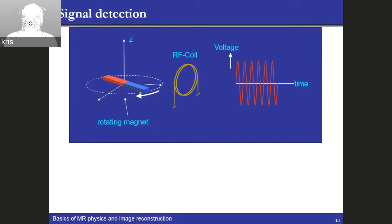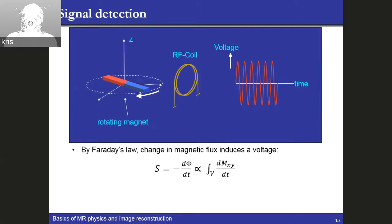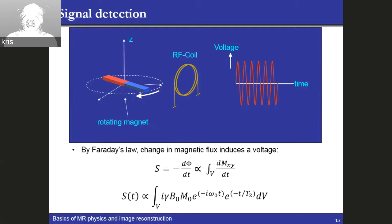We now have a signal generated in the transverse plane, scaled by some constants. To measure the signal, we rely on Faraday's law — as the magnetization changes, it introduces a magnetic flux which can induce a voltage in a nearby coil. The change in flux will be proportional to how the magnetization evolves over time. The signal — this induced voltage — is proportional to the gyromagnetic ratio, the B0 field, and also to M0. Since M0 is also proportional to B0, there is a heavy dependence on the field, which is why there has always been a drive to go to higher fields in MR for higher signal.